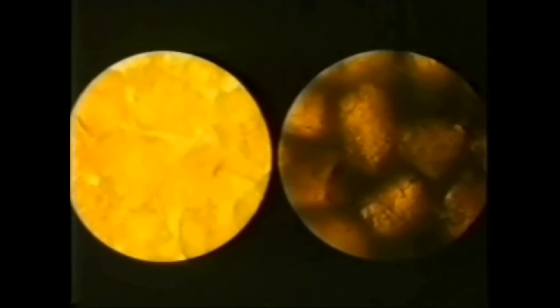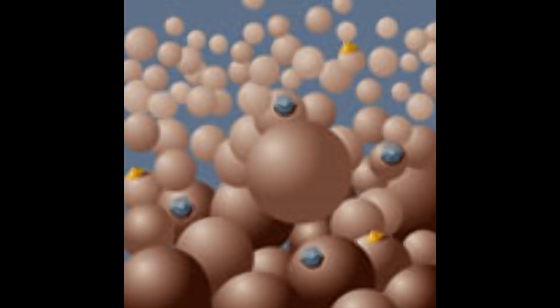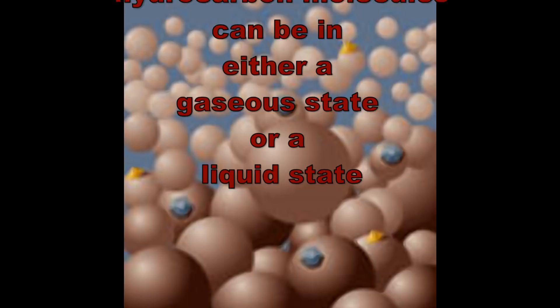As you learned in science, a fluid is defined as a substance that changes its shape to whatever container it's in. When we talk about a fluid in a reservoir, it can be either a gas or a liquid. Both meet the definition of a fluid. There are three basic fluids that accumulate in porous permeable rock. They are water, oil, and gas.